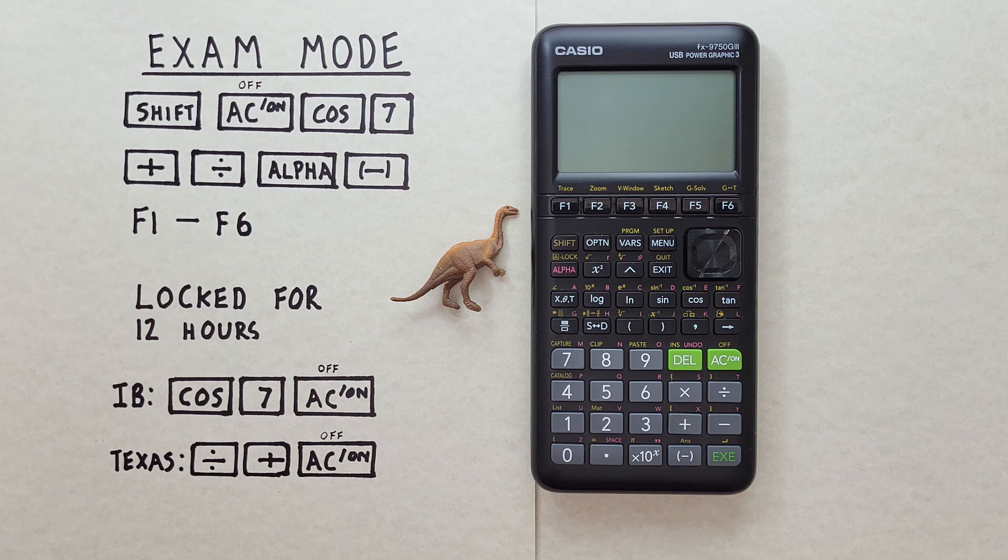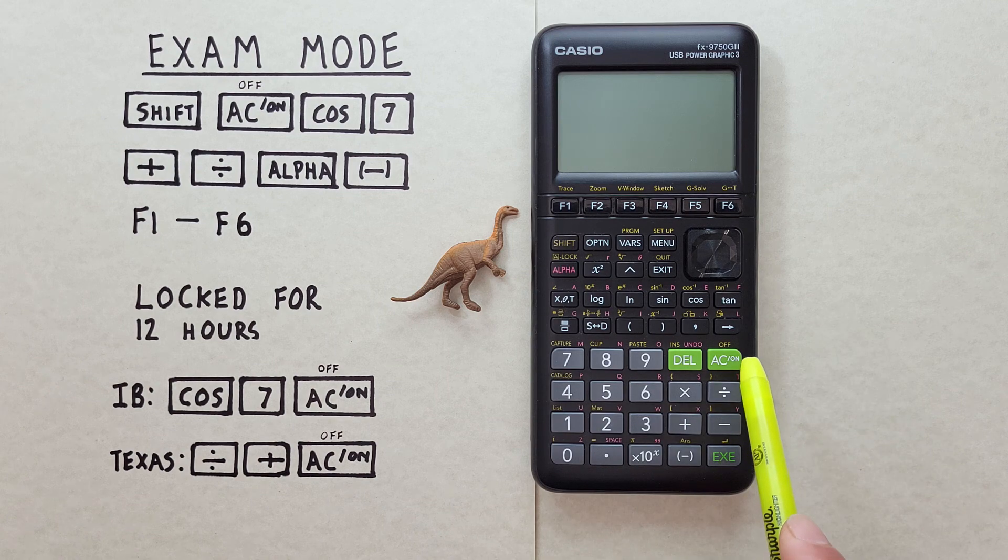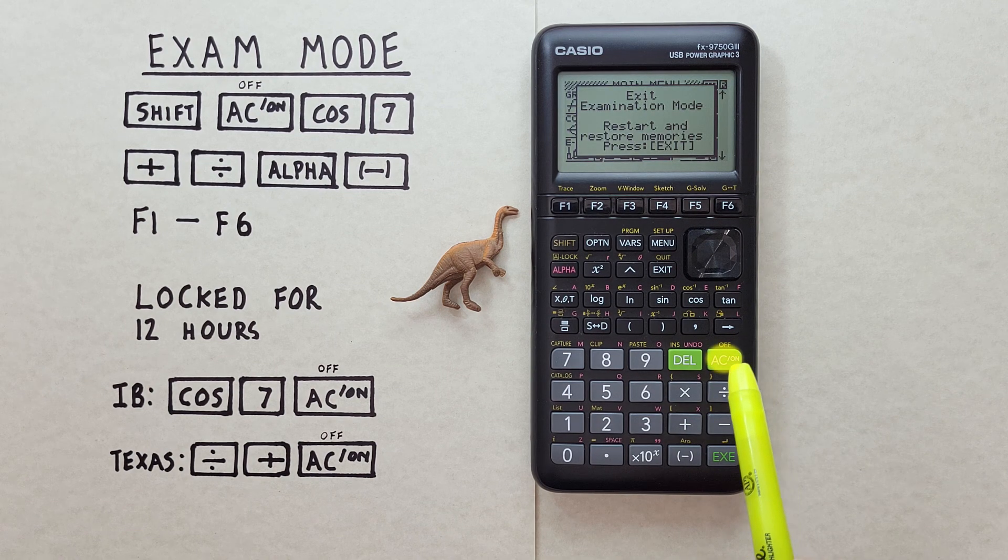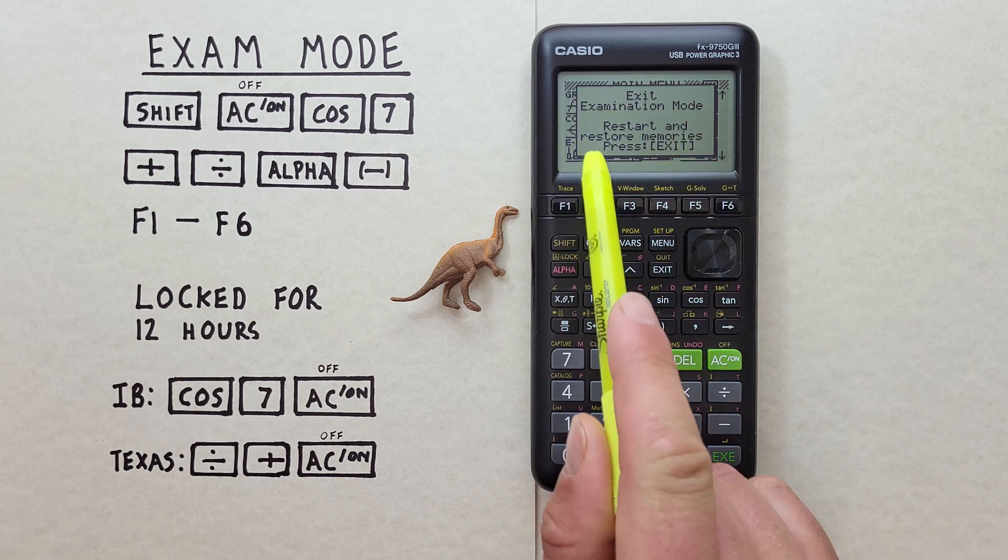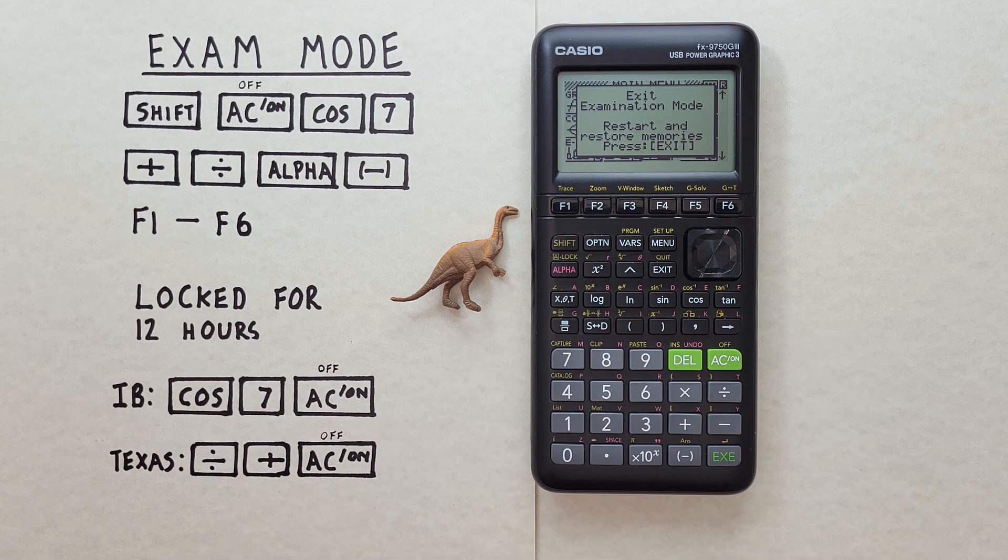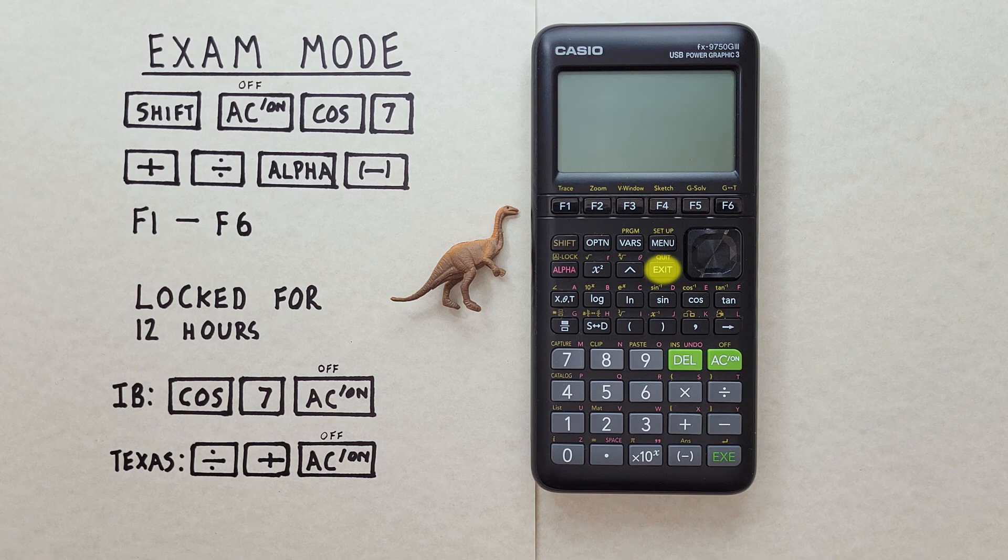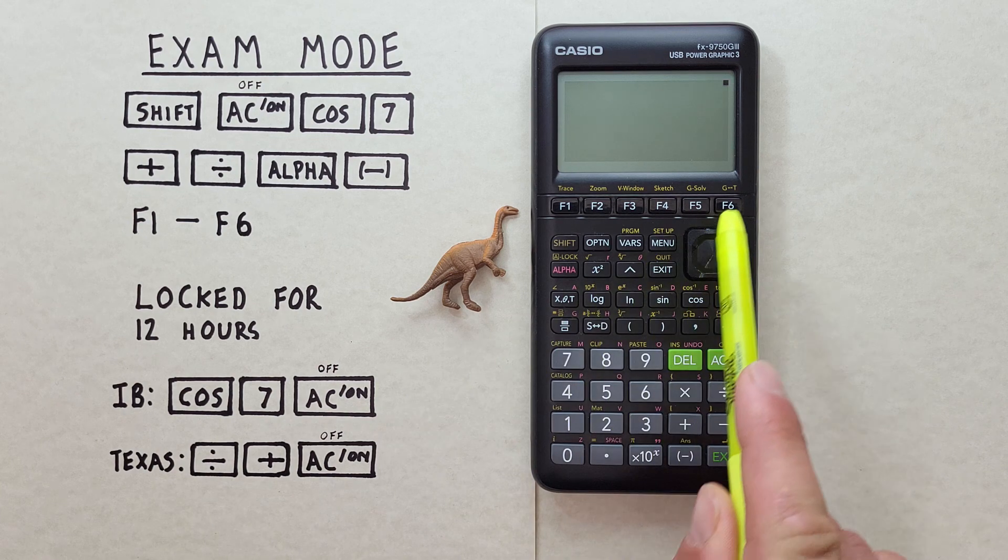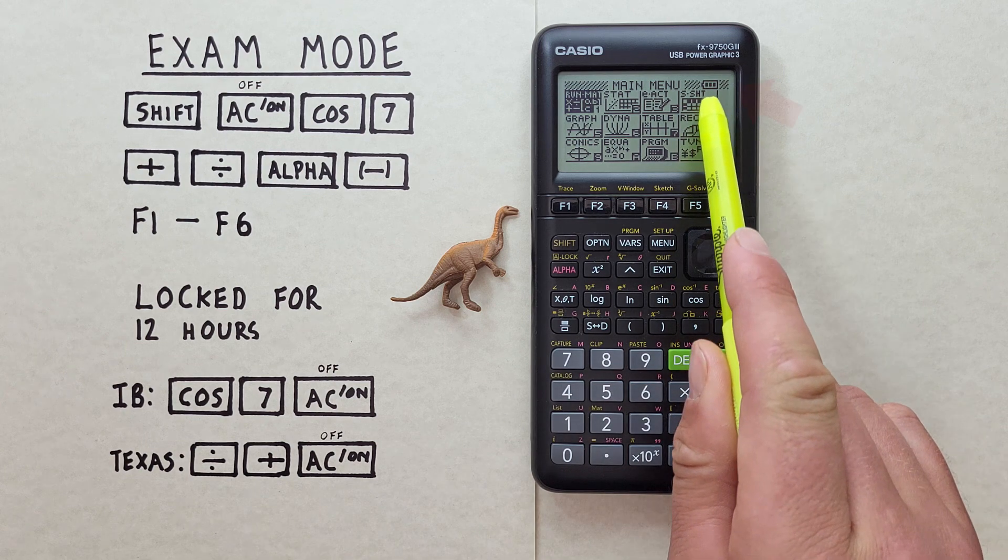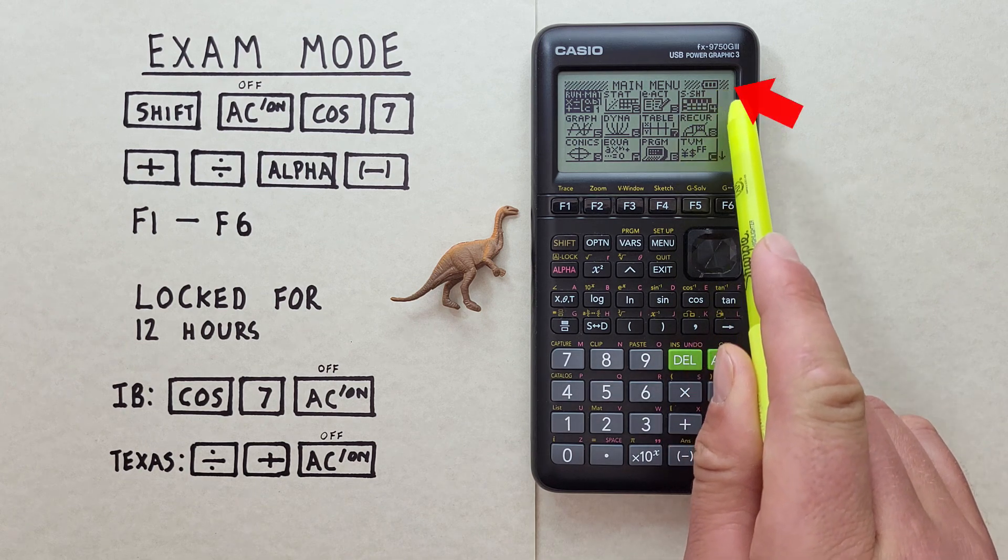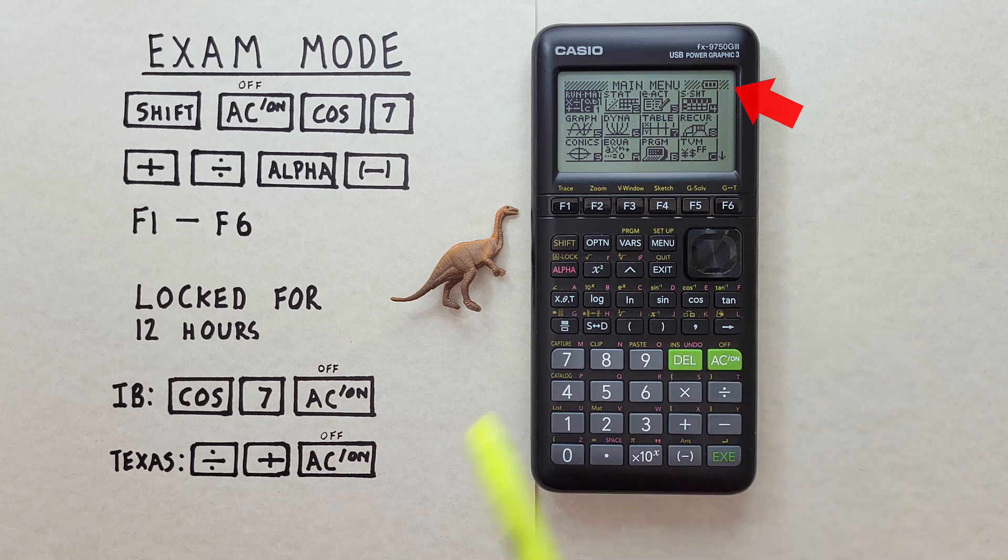Welcome to the future! It's now been 12 hours since we put our calculator into Exam Mode. And let's see what happens. So if we go and turn it on, we get this message here. Exit Examination Mode. Restart and Restore Memories. Press Exit. So we just go ahead and press Exit. Our calculator restarts itself. And we see there's no longer that letter in the top right-hand corner of the screen. So that means we're out of Exam Mode.